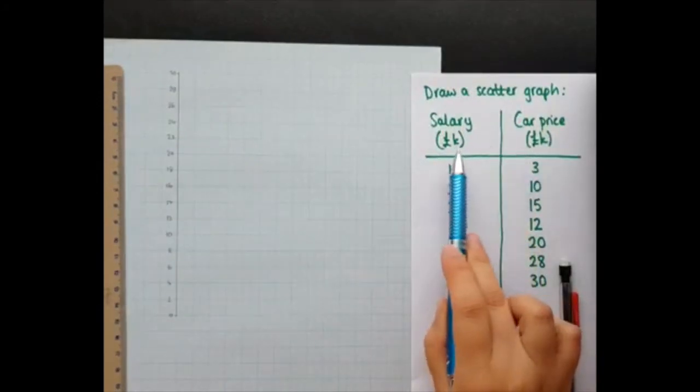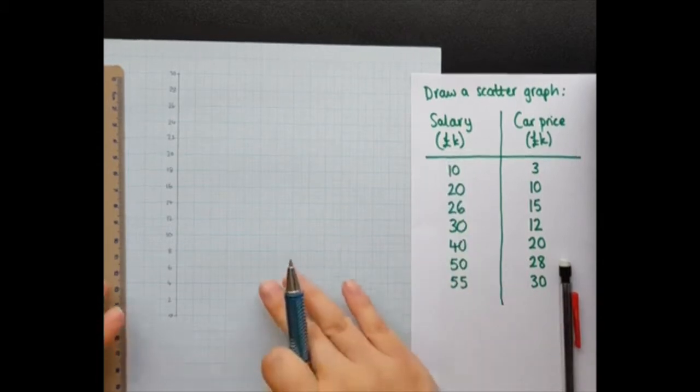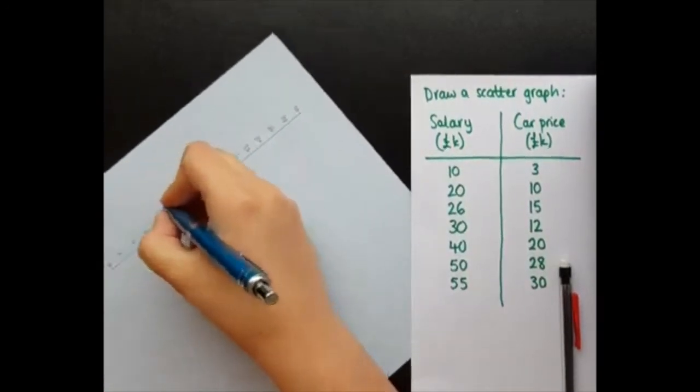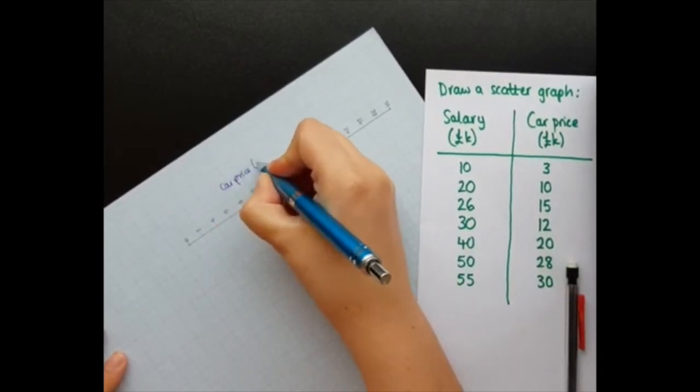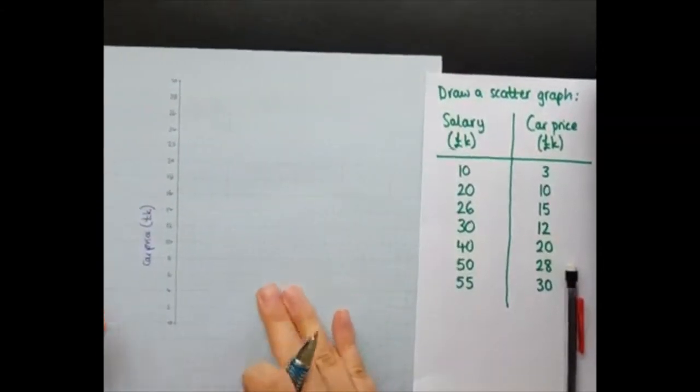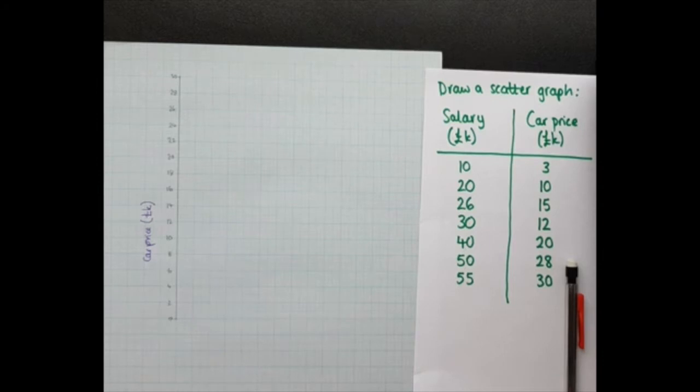So that is my y-axis, my car price. And you can tell that these salaries and car prices, by the way, are in thousands of pounds. So this is the pound symbol for Great British pounds and the K means 1000. It's not a very cheap car. So I'm going to put on this axis a label. So car price and I also need to include my units of thousands of pounds. And you see I use pen to label my axes. It's only drawing the graph that you necessarily need a pencil for.